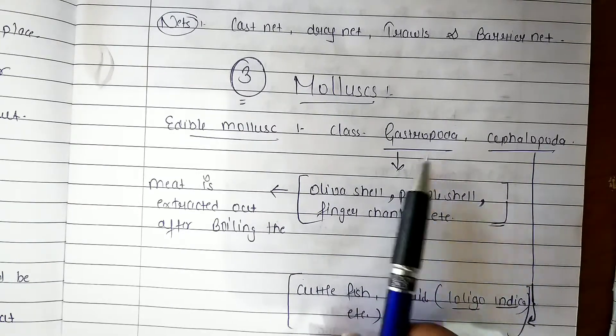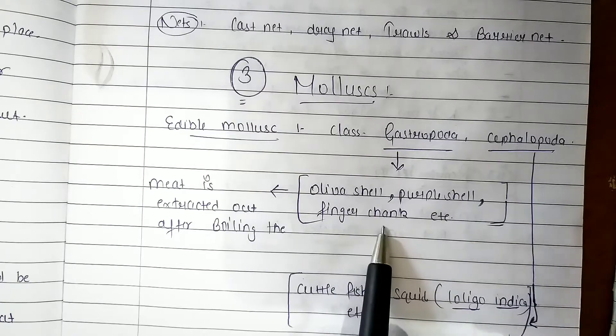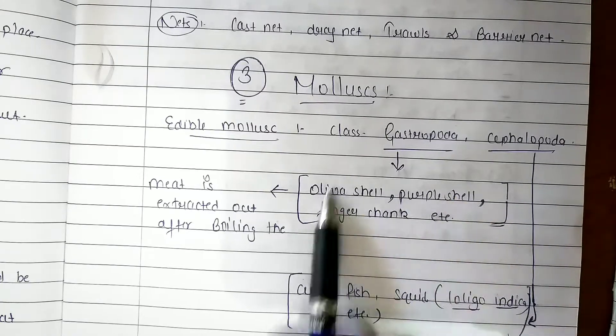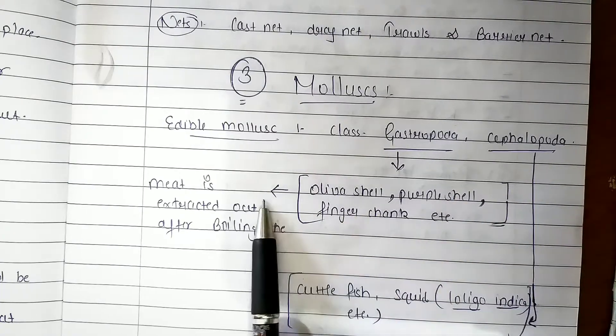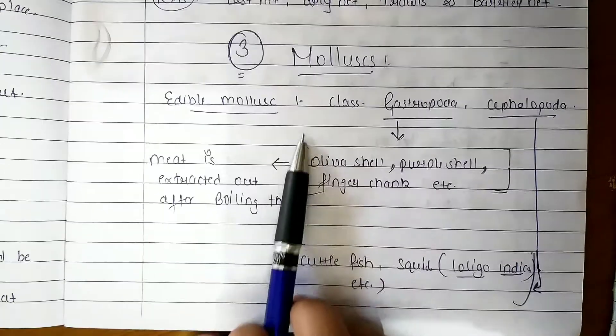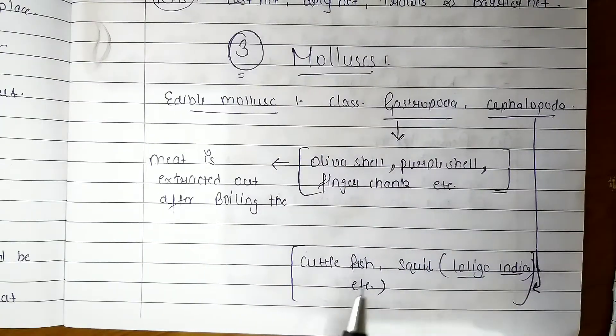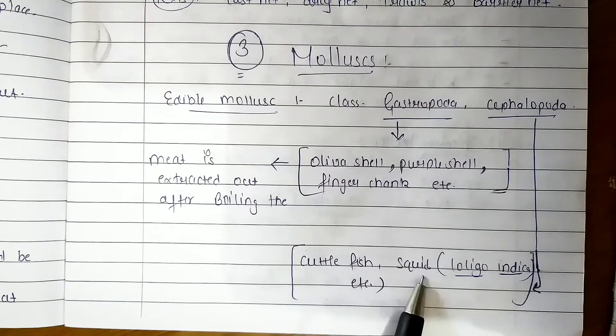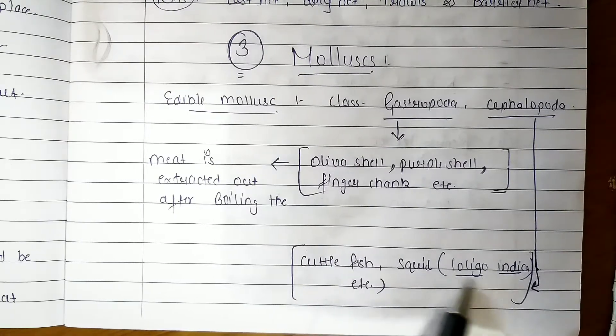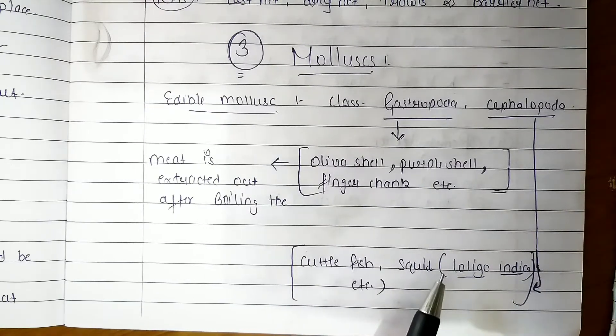The Gastropoda include olive shell, purple shell, or finger check. We will boil these shells to extract the meat, which is like cephalopods. There are some names we have studied earlier, like cuttlefish and squids. Squids means lolly. This is also an example.